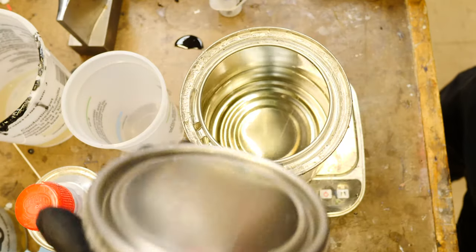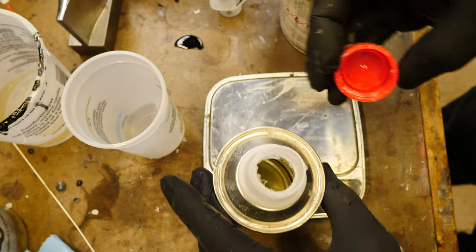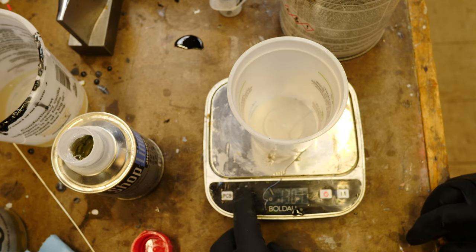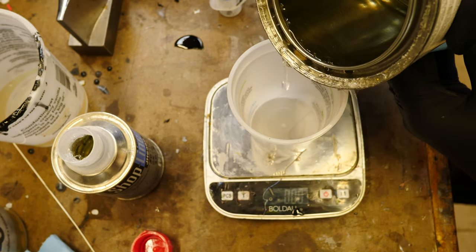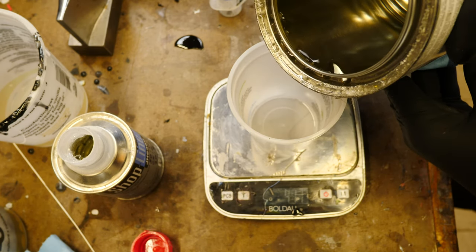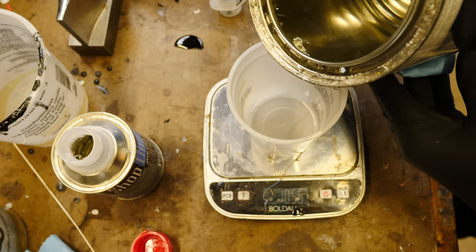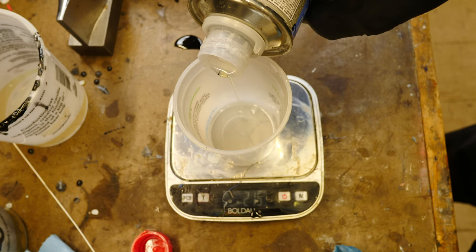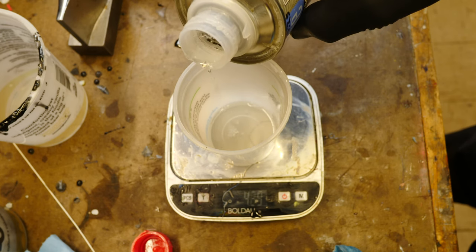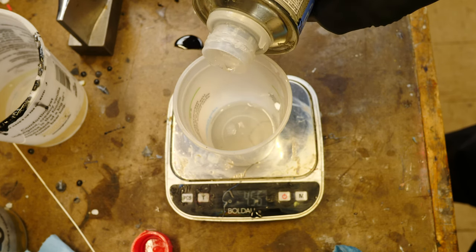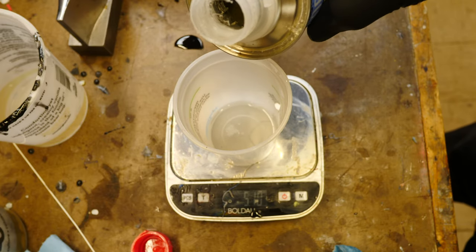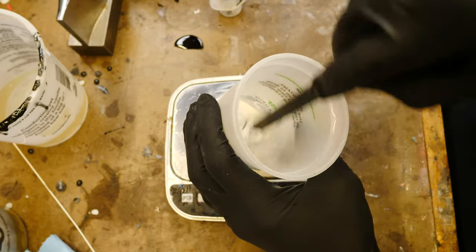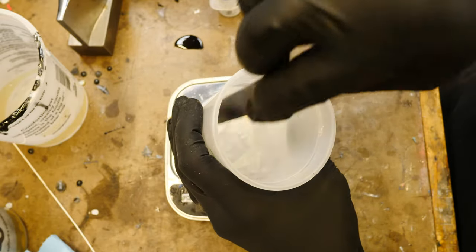I'm going to mix up some two-part urethane automotive clear coat and in this case, I'm using this Shopline product made by PPG. Any good two-part urethane clear coat, automotive grade is going to be fine. Here, I'm putting the hardener in it. You mix that at a certain ratio. I will leave a link in the description below to a urethane primer with an Amazon link.